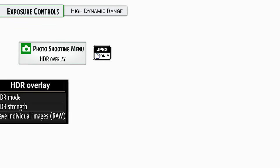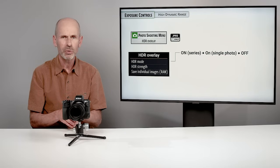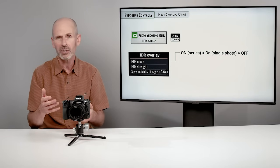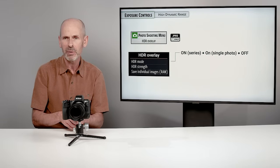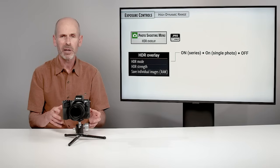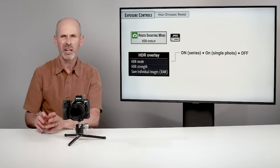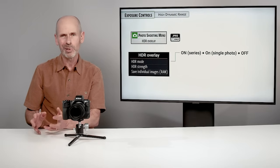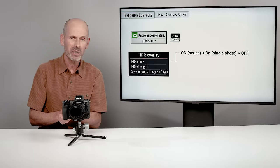The camera also has a built-in High Dynamic Range feature called HDR overlay. The downside is it works in JPEG only — not raw. It shoots a series of brighter and darker exposures and combines them in-camera. This saves you the traditional workflow of shooting multiple images and merging them in software on a computer, though the in-camera result is more limited.